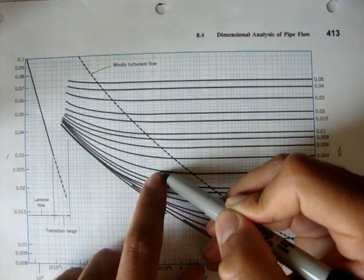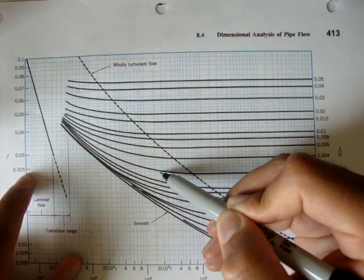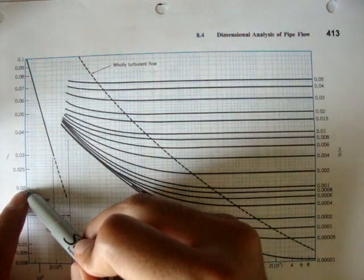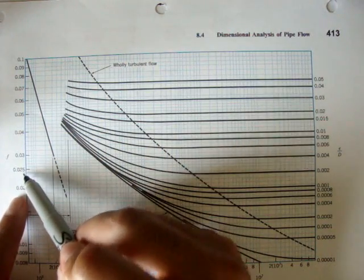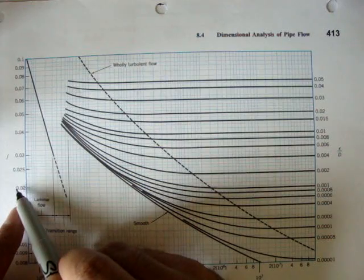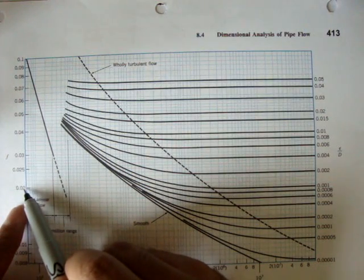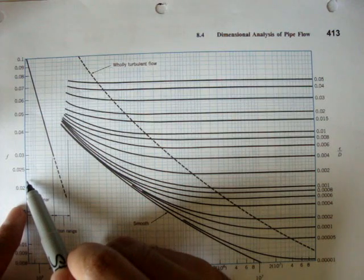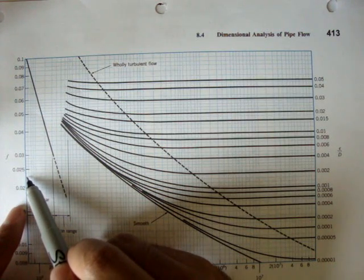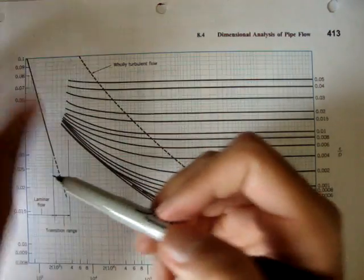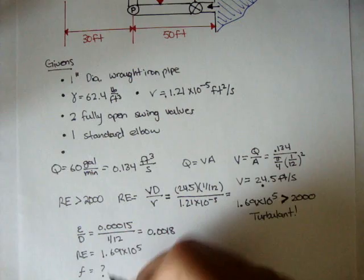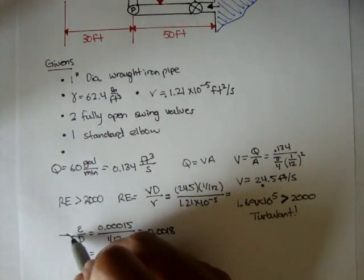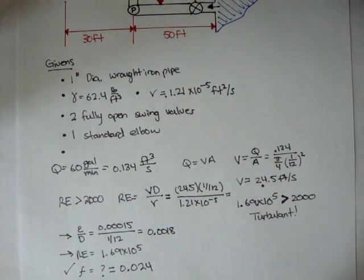And if we use that intersection to find our frictional factor, we see it's 0.024, right? Because this is 0.02, and this is 0.025, and there's 5 blue lines in between. So it increases by 0.001. So this would be 0.02, 0.021, 0.022, 0.023, 0.024. So our frictional factor would be 0.024. Using the relative roughness and the Reynolds number, we found the frictional factor.